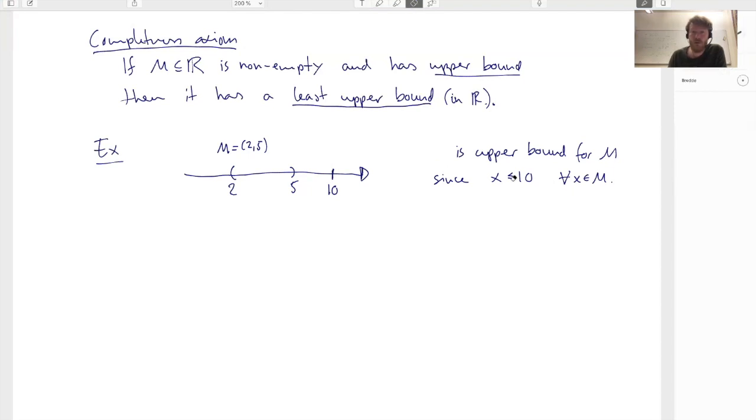If you want to be more general here, we can say that a number u is an upper bound for M if x is smaller than or equal to u for all x in M. So this is actually the definition of what an upper bound is.